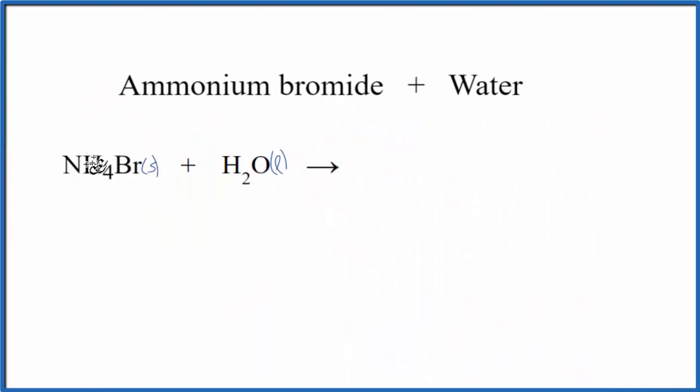So now we can split this apart into its ions. The ammonium ion, that's NH4 plus. And because it's soluble, because it dissolves in water, it's dissociating into its ions. We put an AQ. That AQ means aqueous. This is dissolved in the water.